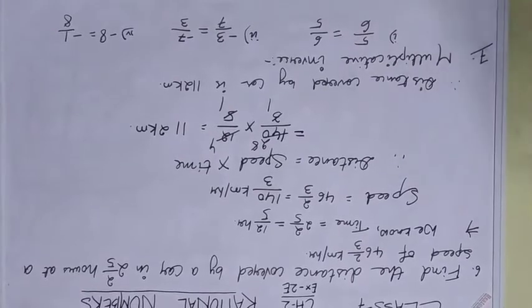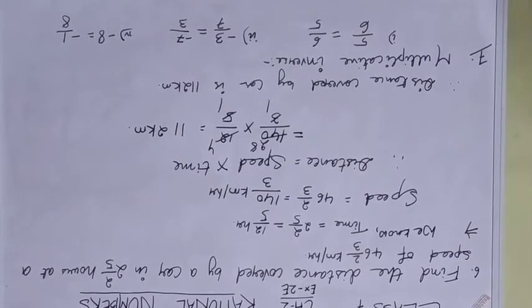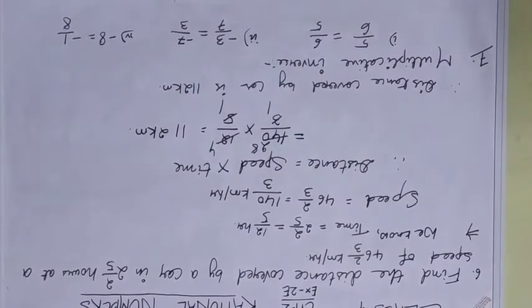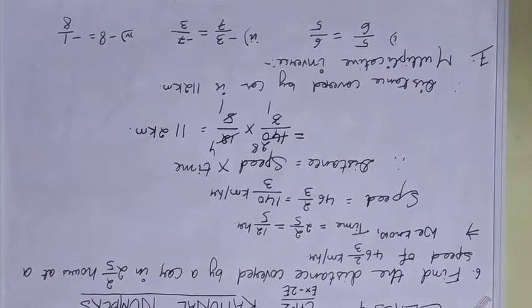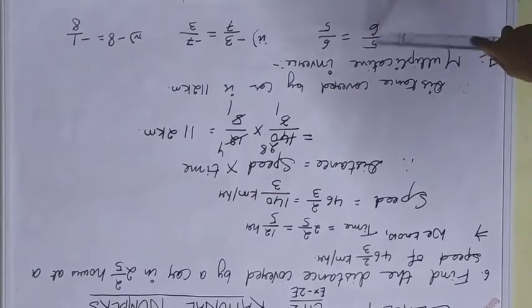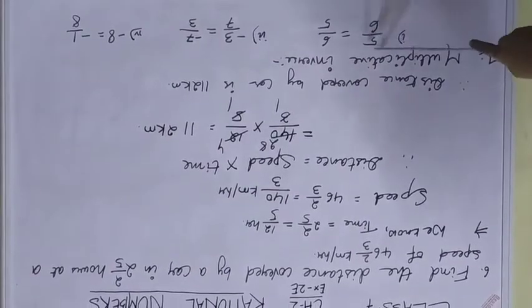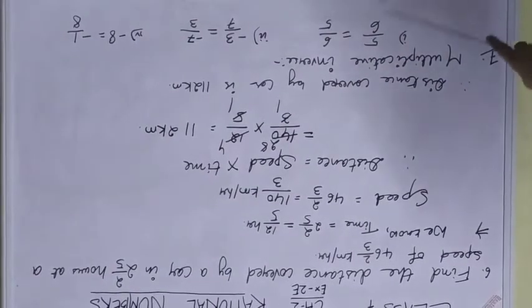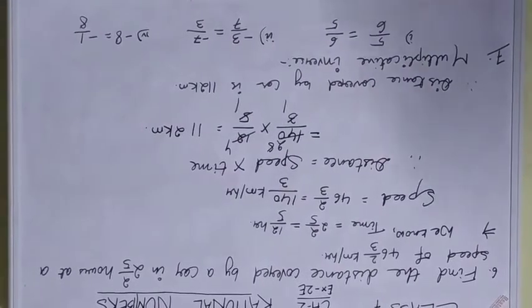Now coming back to multiplicative inverse. We have read about additive inverse. In case of multiplicative inverse, if we have 5/6, the multiplicative inverse is we just interchange the numerator and denominator, so 5/6 becomes 6/5.